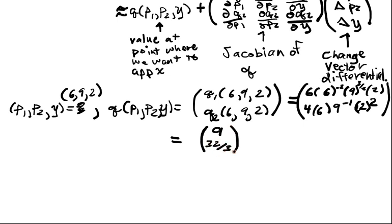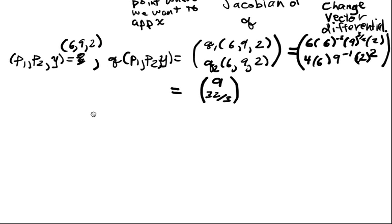So that's my point of approximation, the point that I want to approximate around. That's the value at the point where I want to approximate. Now I have to compute a lot of derivatives. We're doing multivariable differentiation. Multivariable means many variables, so we have to do many differentiations. Exactly 6 of them.